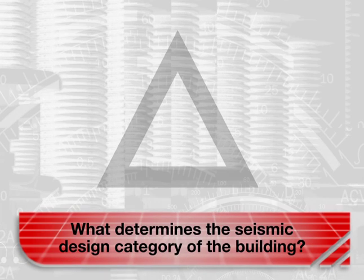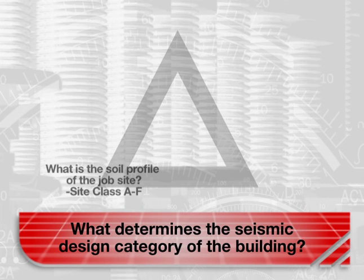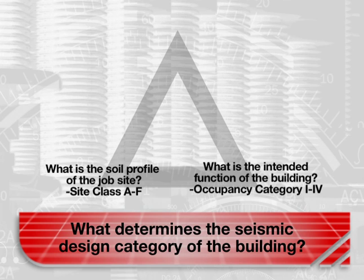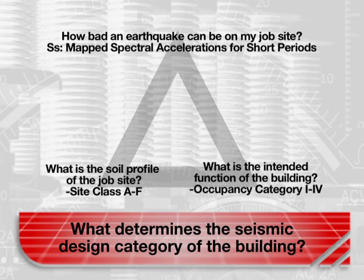The seismic design category is derived from three factors: the soil profile of the site, the intended purpose of the building, and the mapped spectral accelerations for short periods.